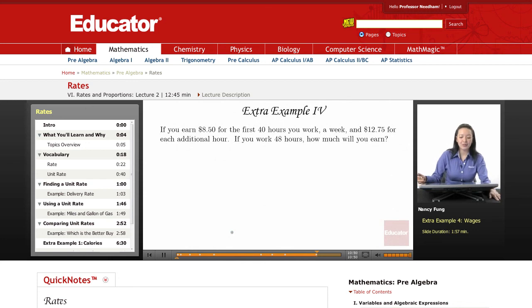If you earn $8.50 for the first 40 hours you work a week, and $12.75 for each additional hour, let's find out how much you would earn if you worked 48 hours. So let's take out the original 40 hours from 48, because we know that costs a different amount.